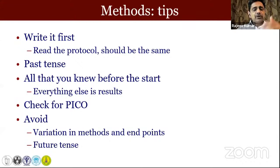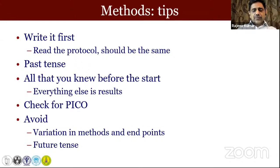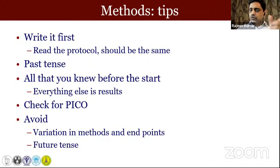Check for PICO — patients, intervention, comparison, and outcome. Most importantly, don't make any variations in your methods and endpoints. If you want to measure success of urethroplasty, measure it objectively — by uroflowmetry, retrograde urethrogram, or lack of intervention — rather than just asking if the patient says they're happy. The more objective the outcome measure, the better.